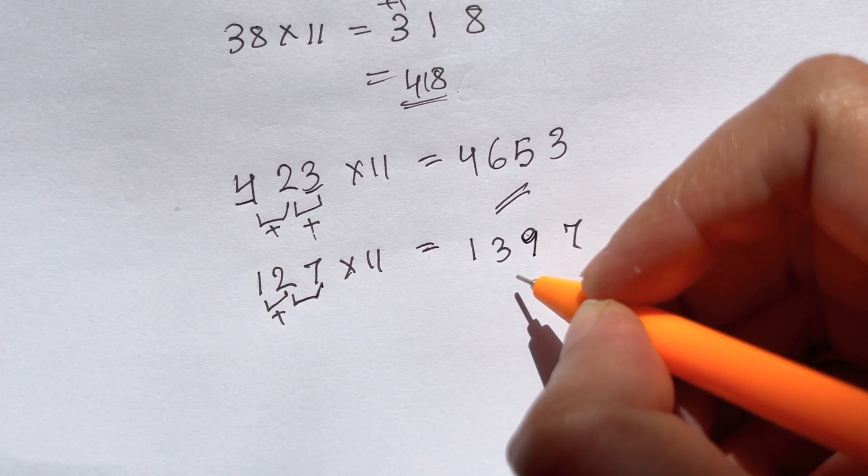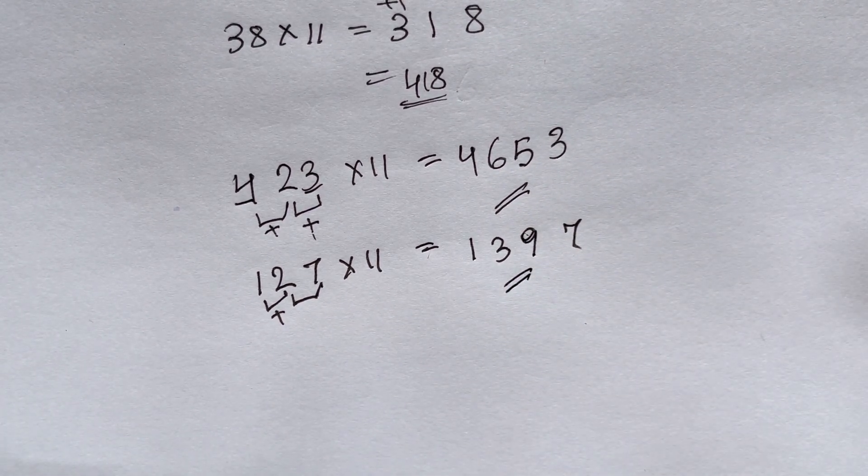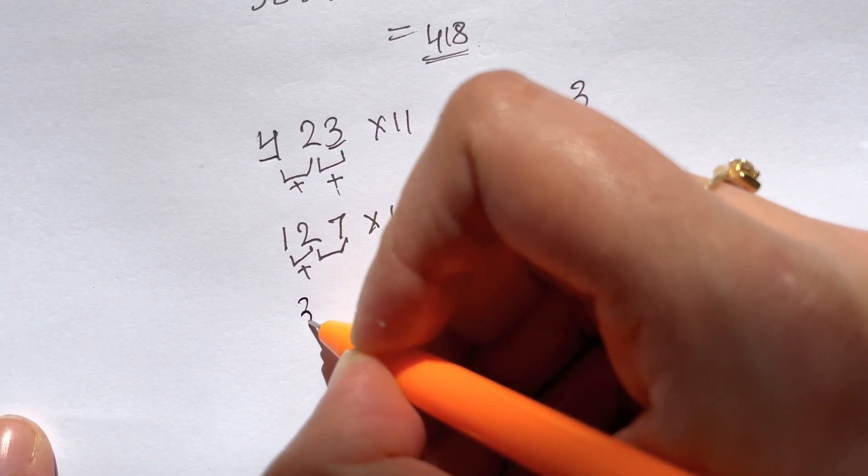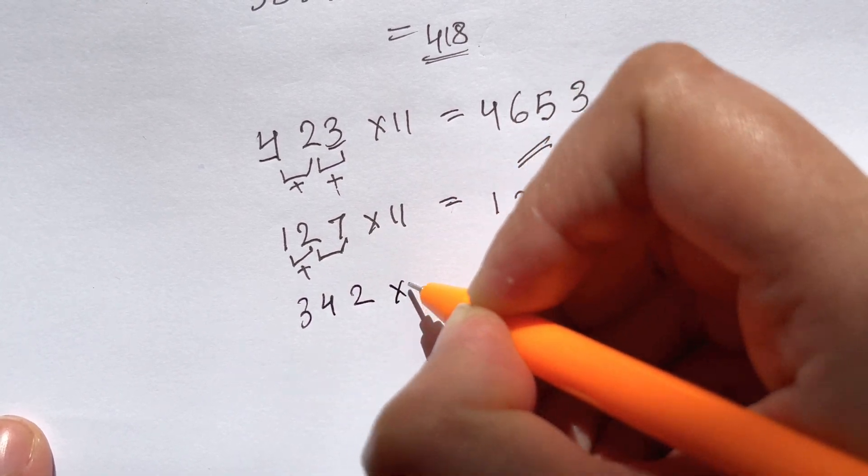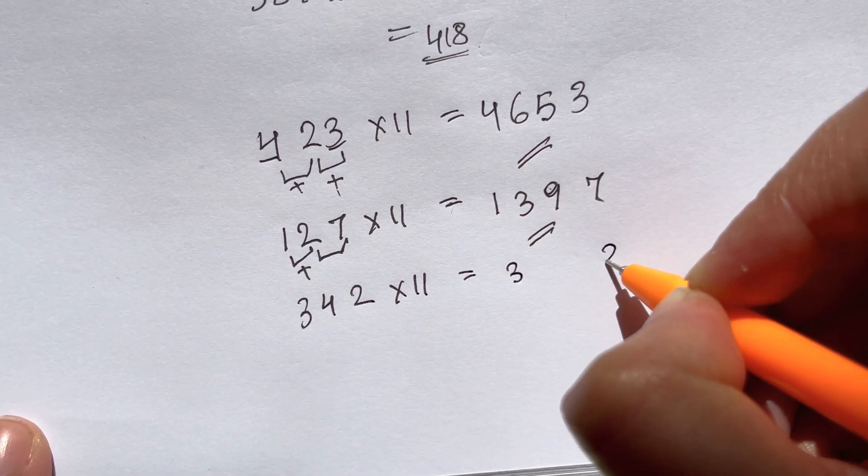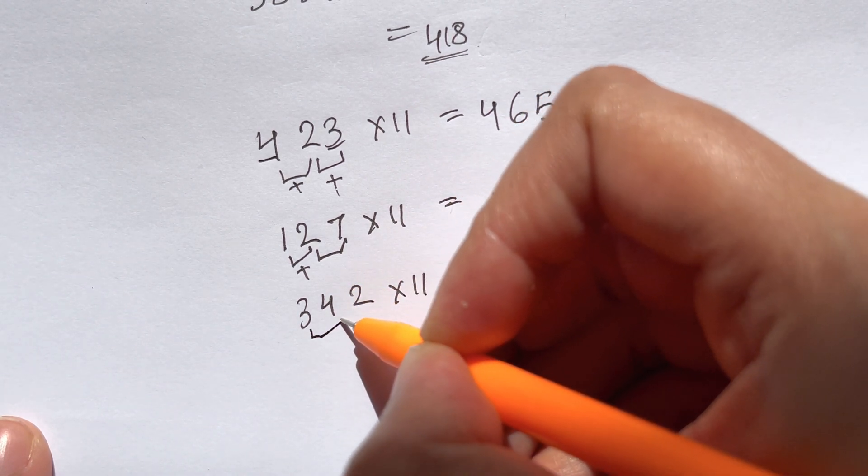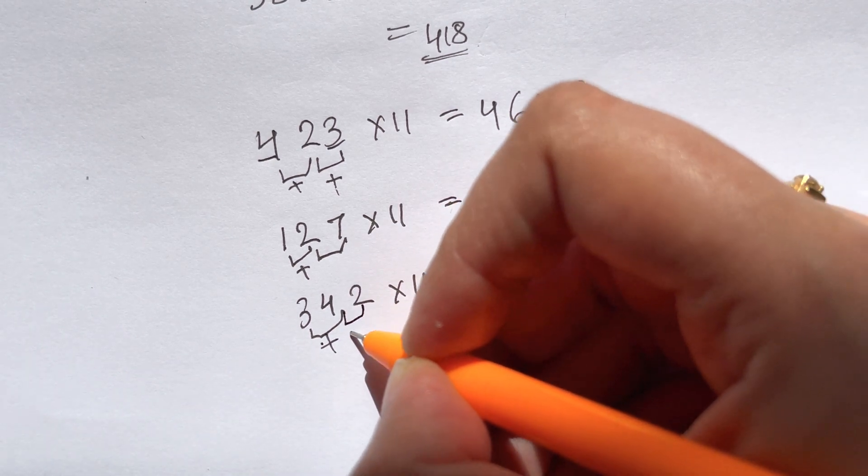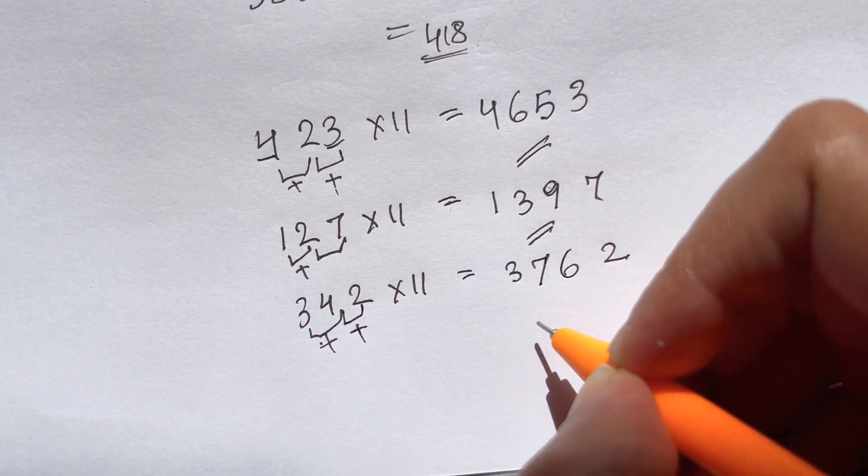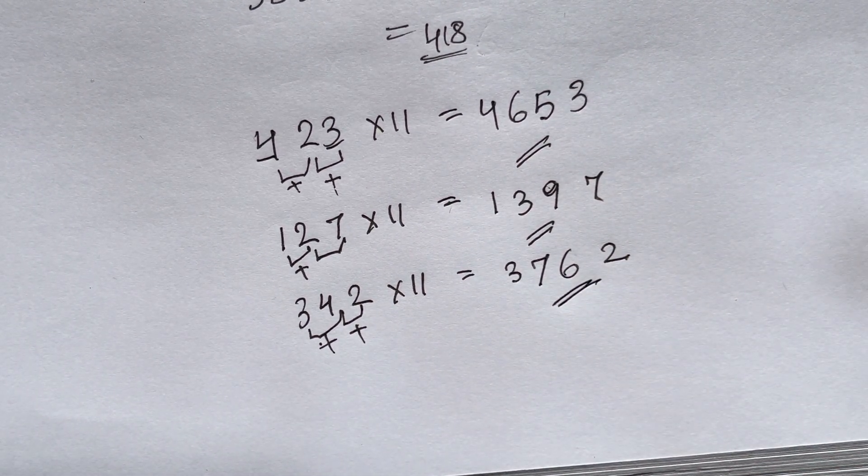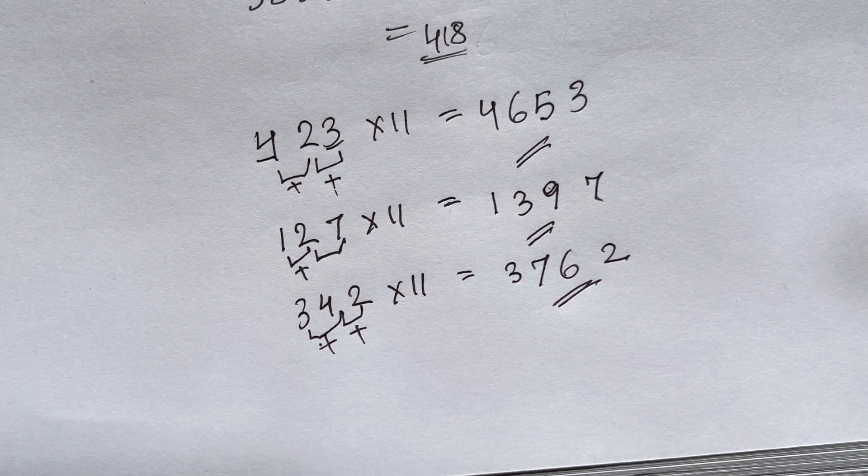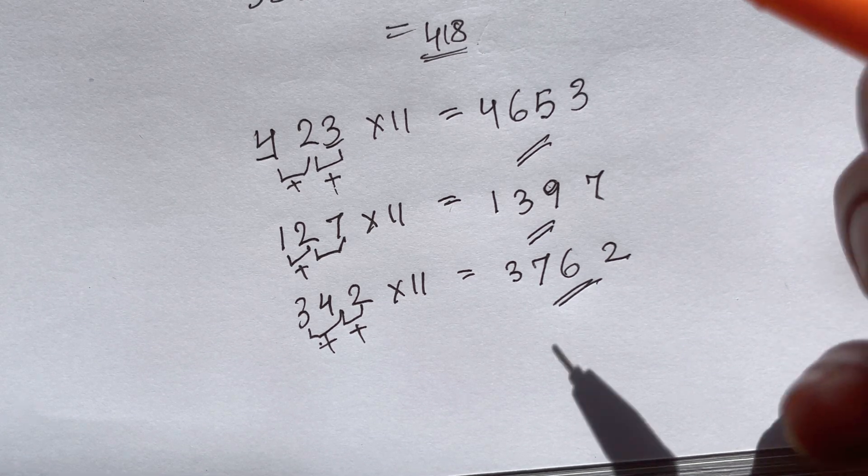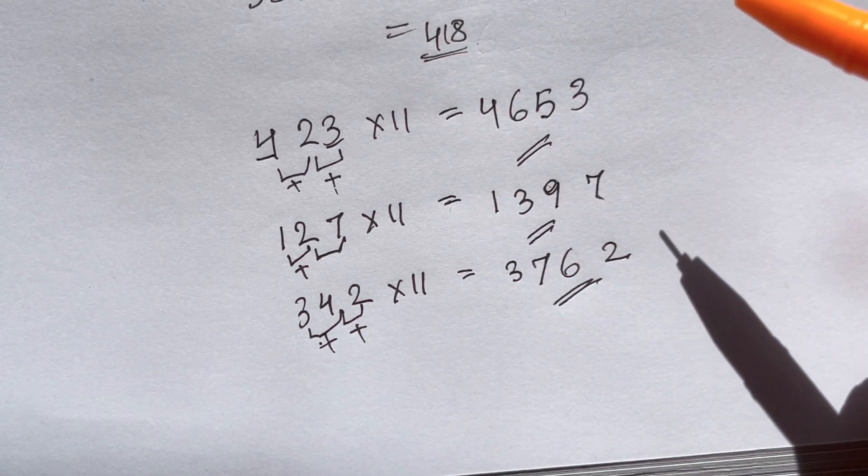Let us try out another example, 342 times 11. Just write down 3 and a 2 and you go on adding up. 3 plus 4 is 7, 4 plus 2 is 6. So your answer is 3762. If there are carries you can do questions on that also as I've already shown you in the two digit multiplication. Now let us try one example with carry overs.